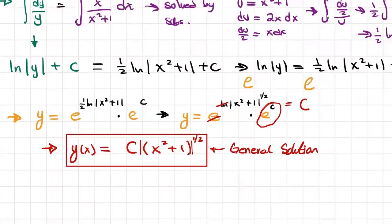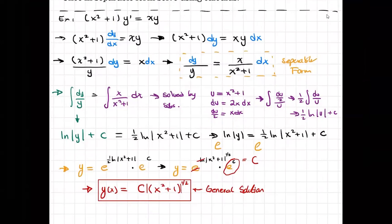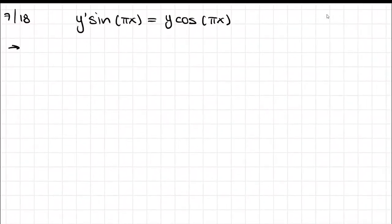Any questions you have, you can follow along. This problem wasn't difficult — it was pretty straightforward. I'll do another one so you can see it; you can follow this along with the notes I've provided. This next problem is Problem 7 on page 18 of your book: y-prime times sin(πx) equals y times cos(πx). Once again, my first step will be to rewrite everything by transforming y-prime into dy/dx: dy/dx times sin(πx) equals y times cos(πx).